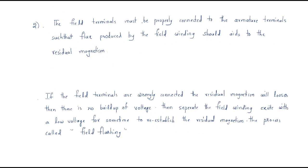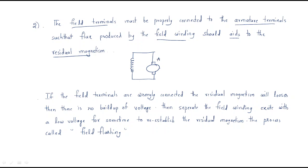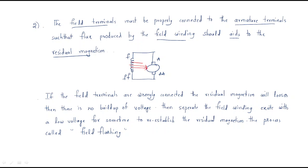The second point is that the field terminals must be properly connected to the armature terminals, such that the flux produced by the field winding aids the residual magnetism. When the machine starts, the residual magnetism causes field current to increase, and the generated EMF also increases.